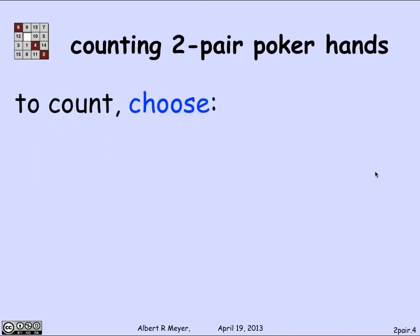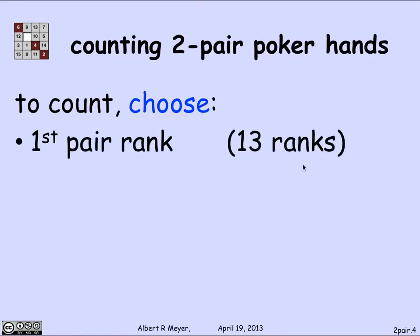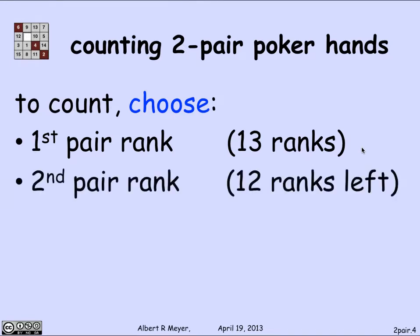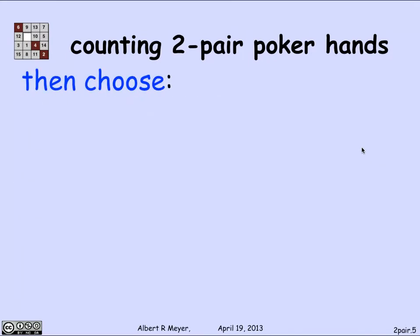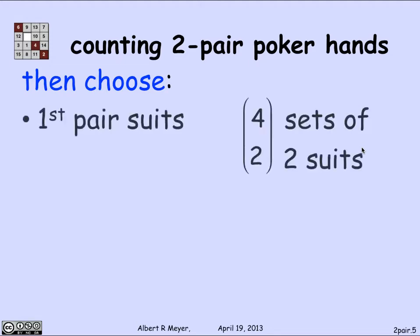The way I'm going to propose to count the number of two-pair hands is this: I'll begin by choosing the rank for the first pair, and there are 13 possible ranks. Once I've fixed the rank for the first pair, the second pair has to have a different rank, so there are 12 ranks left. Once I've picked those two ranks, the rank of the last card has 11 possible choices. Then, once I've chosen the ranks, I select a pair of suits for the first pair — for example if the first pair were going to be two aces, I pick two of the four suits, and there are four choose two ways to do that.